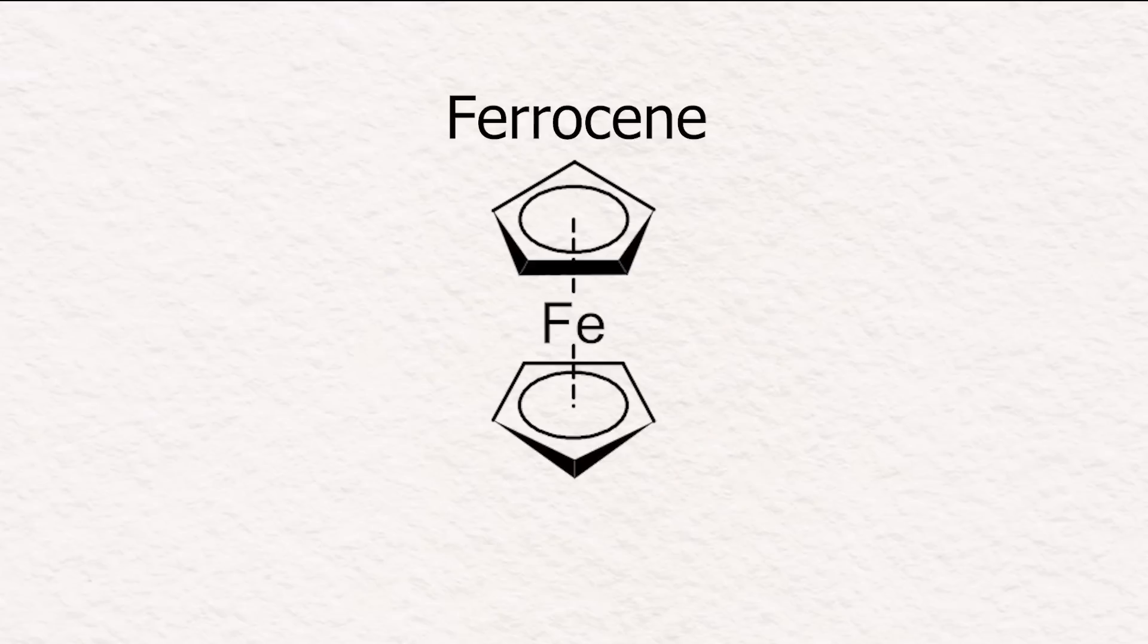The simplest metallocene is called ferrocene, which has an iron atom sandwiched between the cyclopentadiene rings. Ferrocene is one of the few metallocenes that is actually stable in air. So to start off simple, I will first be making ferrocene.